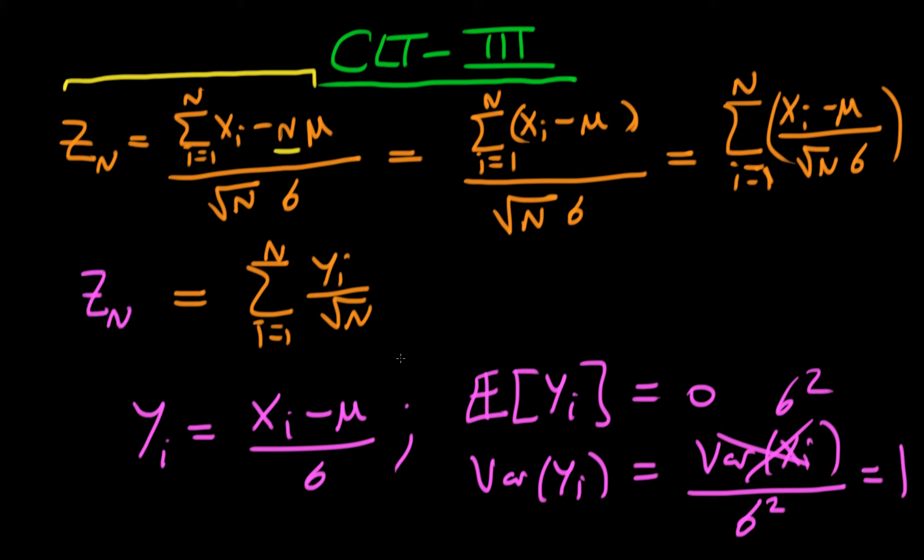So I've defined a standardized sample mean which is defined in terms of a sum of these yi where each individual yi has a mean of 0 and a variance of 1. The only difference being that I've just got this root n factor here on the bottom, and this is quite important because do you remember in our first video on the proof of the central limit theorem